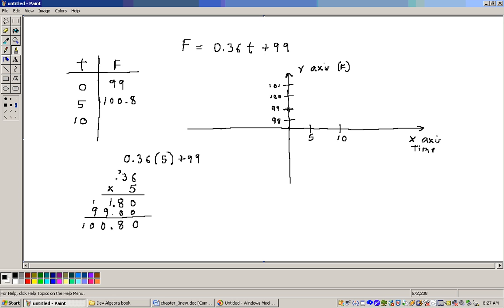0, 99 would be this point right here then. And the next point, 5, 100.8, would be over 5, up 100.8. So, right about here.